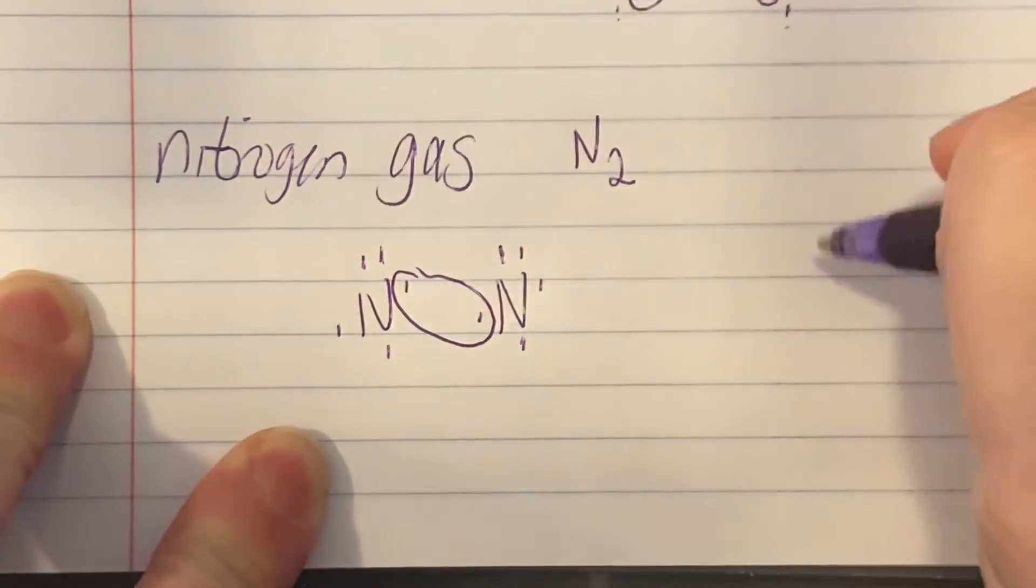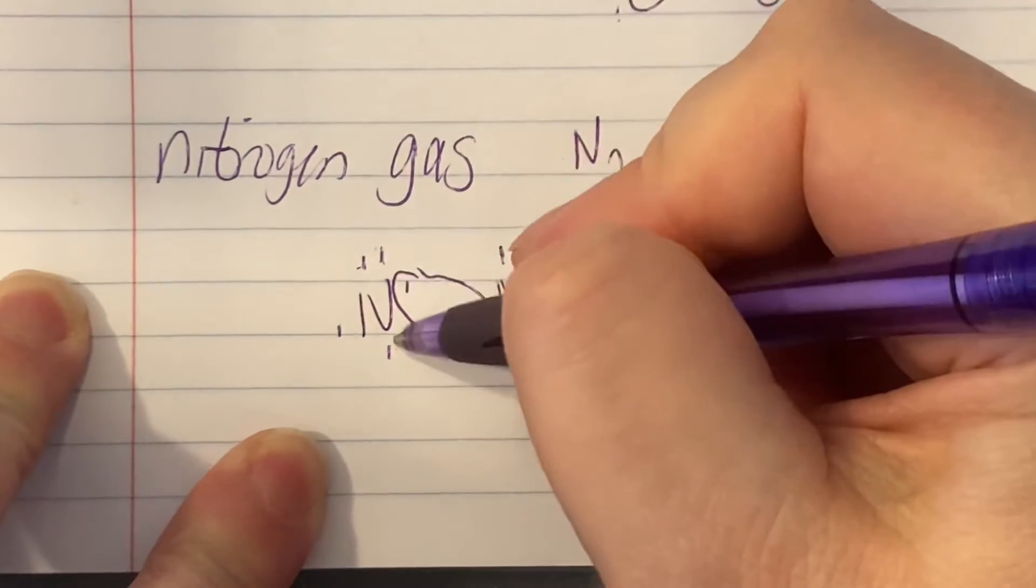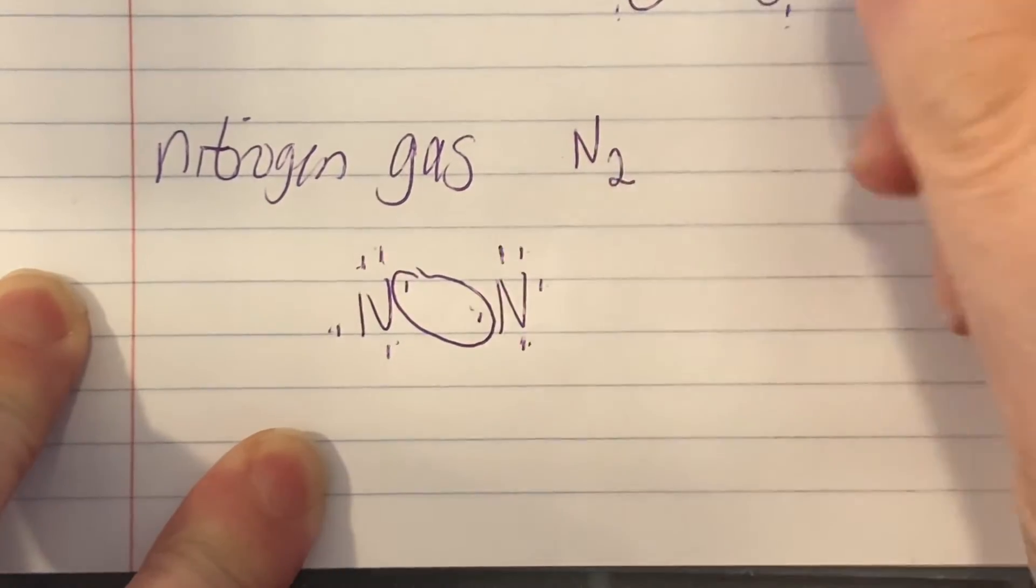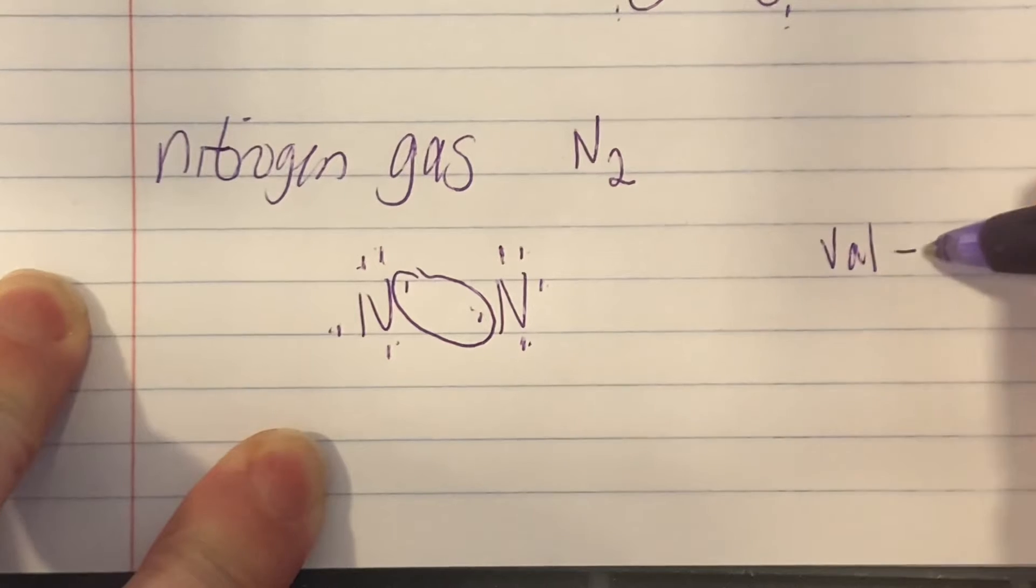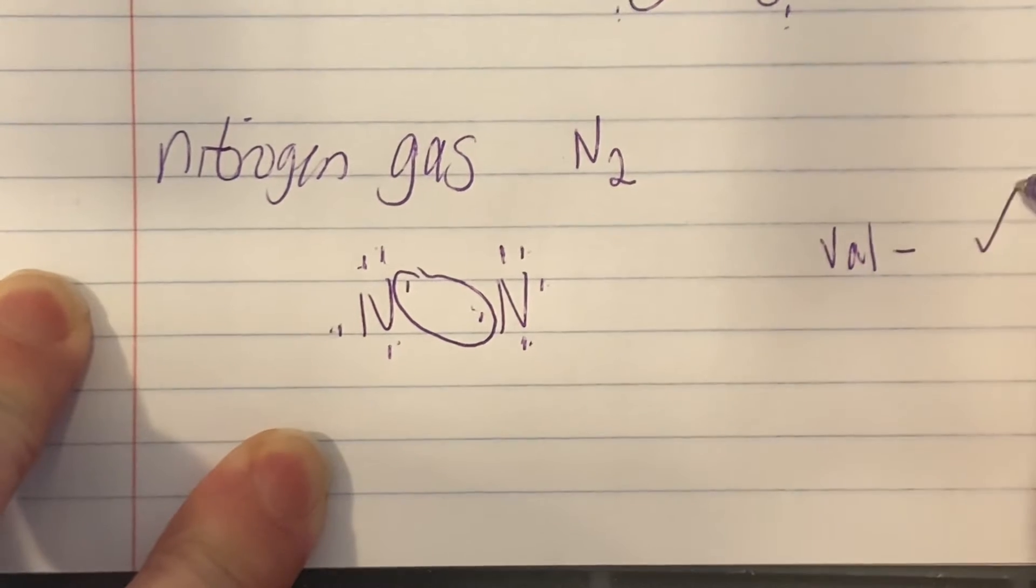I'm always going to do a single bond to start and then check valence. 1, 2, 3, 4, 5, 1, 2, 3, 4, 5. They're in group 15, so five valence electrons, so we are good.